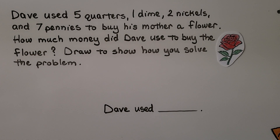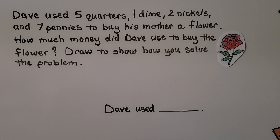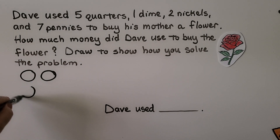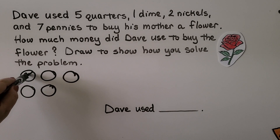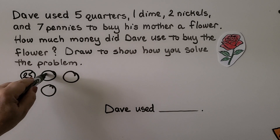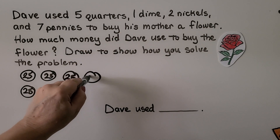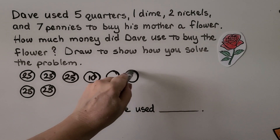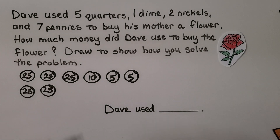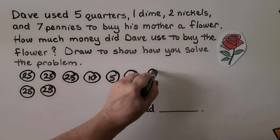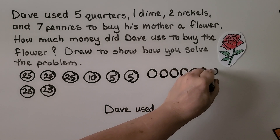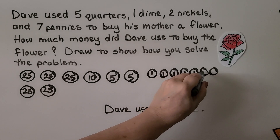Dave used five quarters, one dime, two nickels, and seven pennies to buy his mother a flower. How much money did Dave use to buy the flower? Draw to show how you solved the problem. We draw five quarters with 25 inside each, one dime with 10, two nickels, then seven pennies with a 1 inside each.